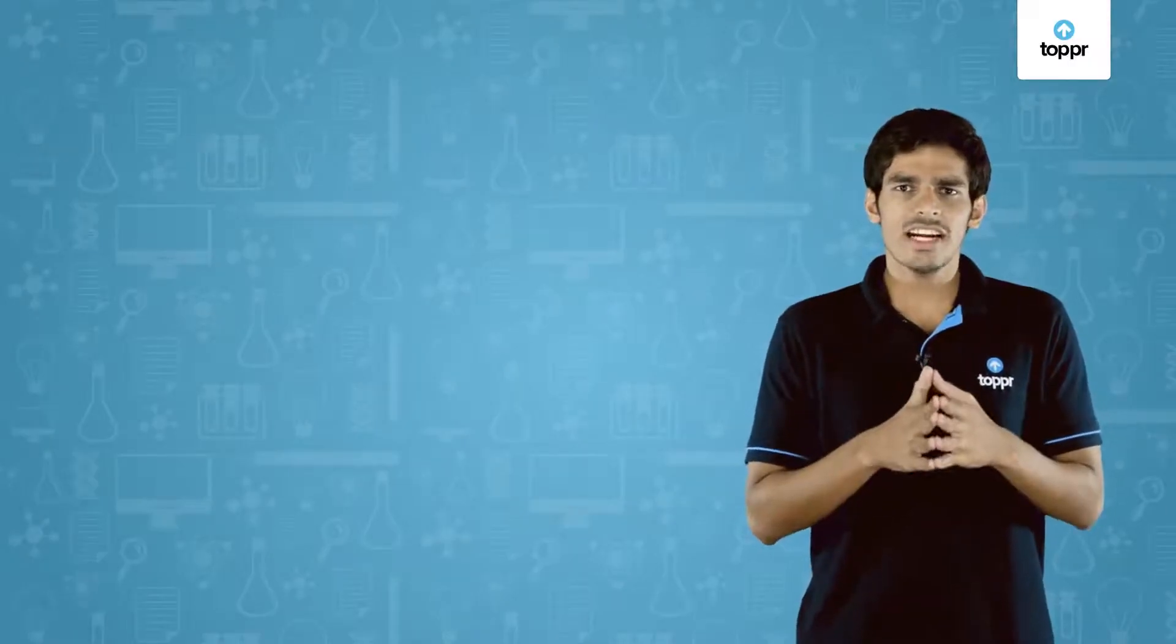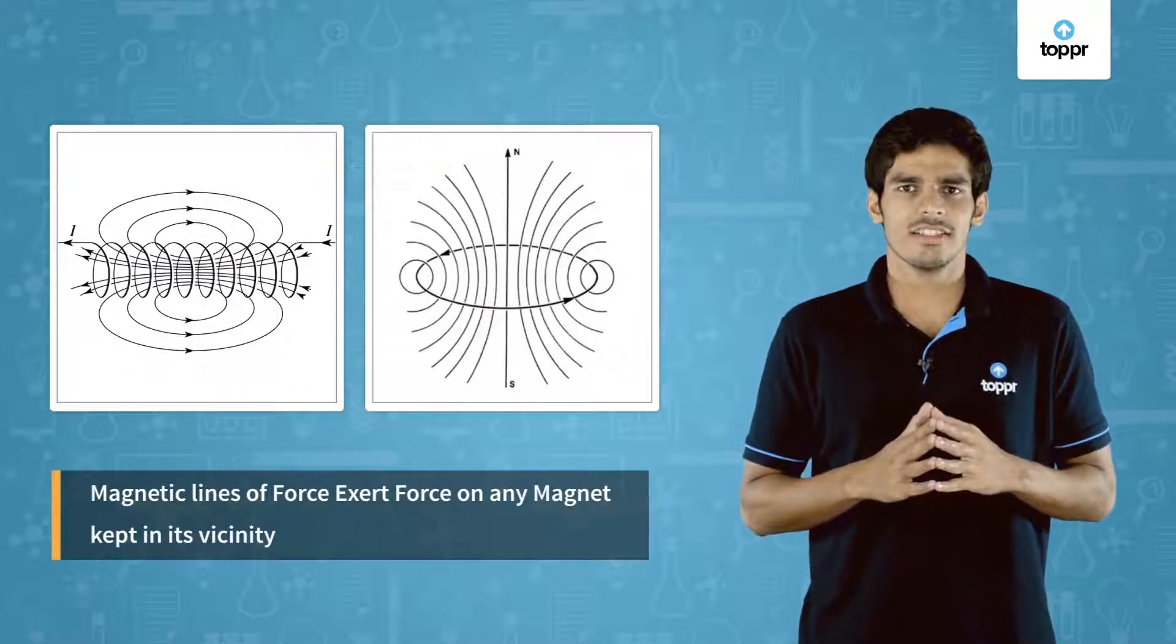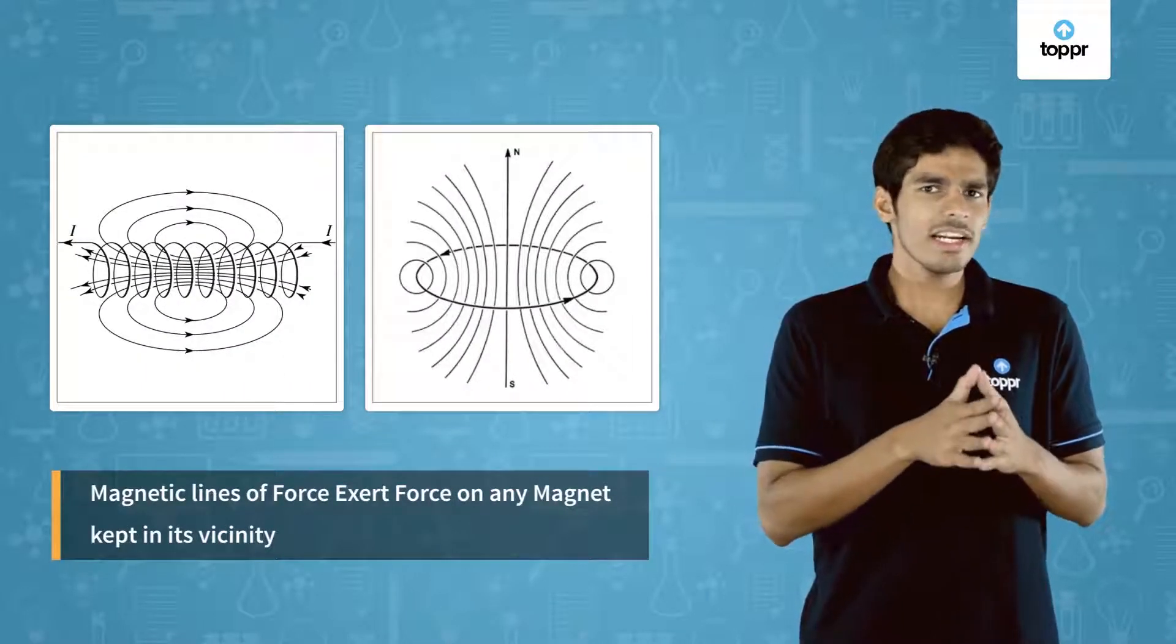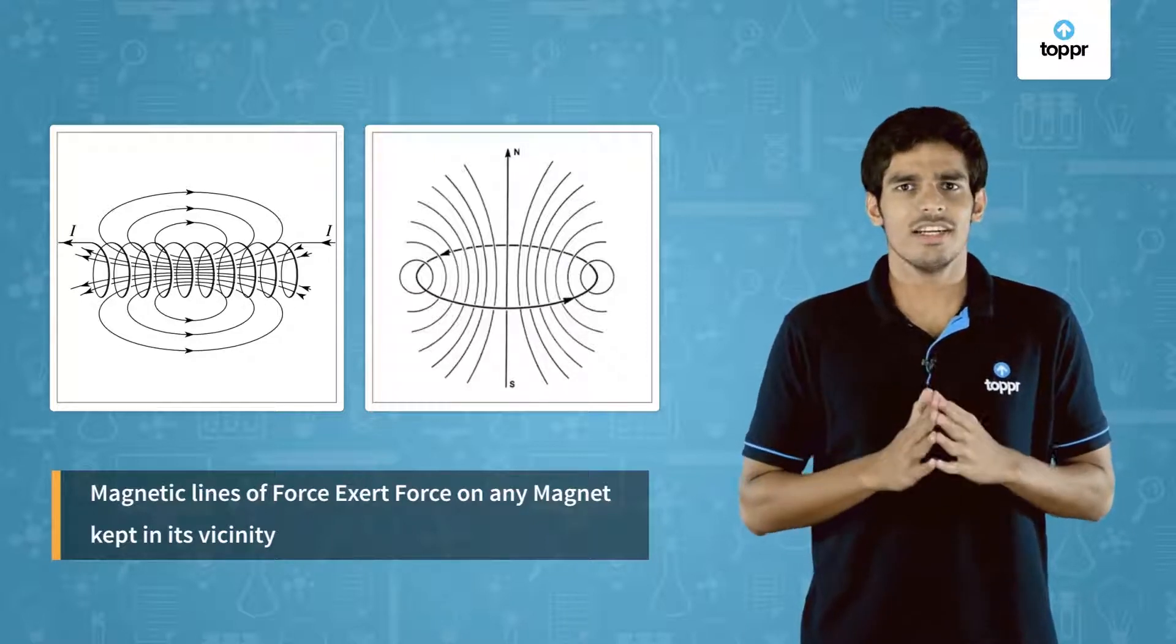In the previous lesson we had seen the magnetic field patterns due to various current carrying conductors. We had seen that magnetic fields are lines of force which exert a force on any magnet kept in its vicinity.